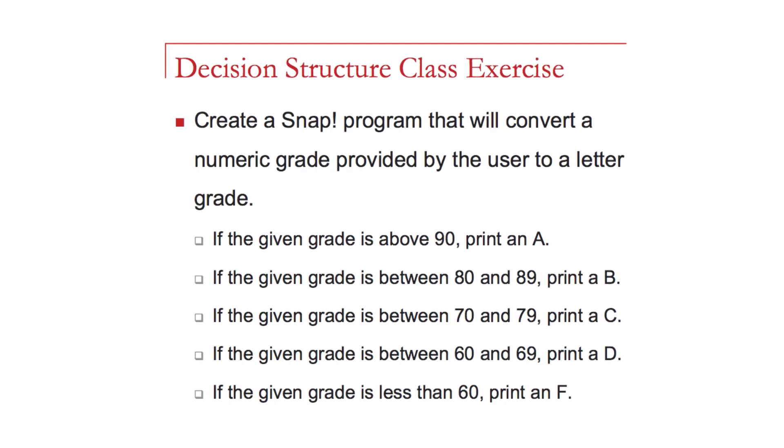Now that we have a basic understanding of the decision structure and relational and logical operators, we'll apply those specifically to creating a new program together. The next lesson, we will explore hands-on a solution to the problem that you see here on the screen. The problem asks to create a SNAP program where we ask the user for a numeric grade from 0 to 100. Our goal is to convert the numeric grade into a letter grade with 90 to 100 an A, 80 to 89 a B, 70 to 79 a C, 60 to 69 a D, and anything lower than 60 an F.